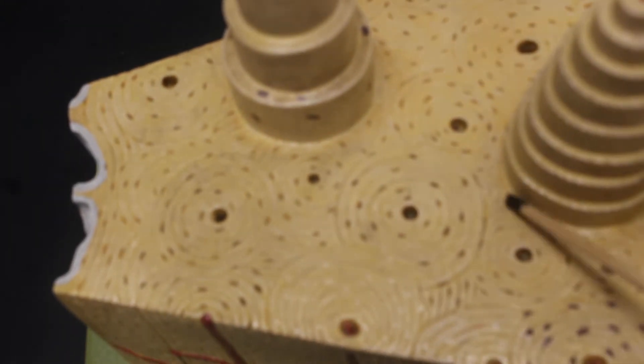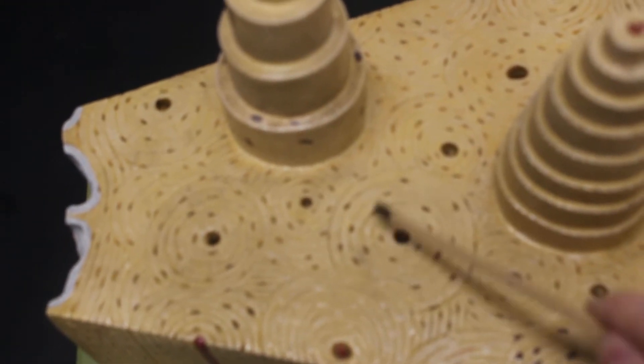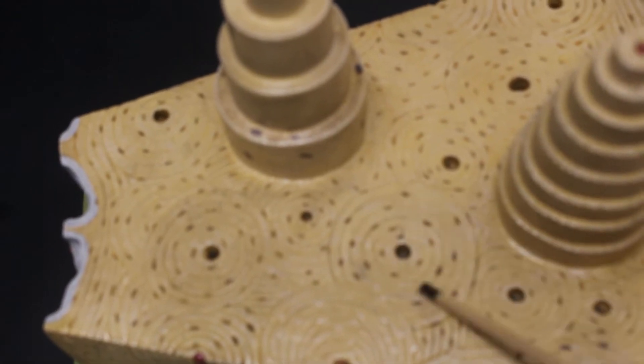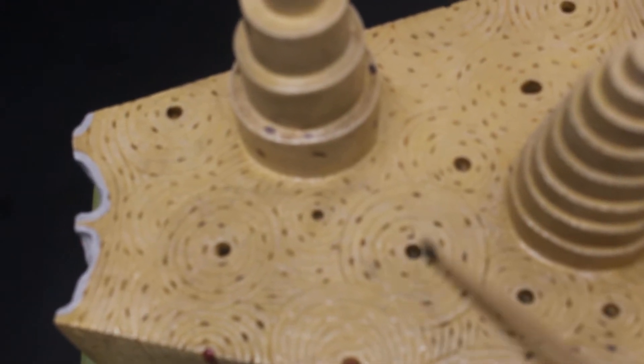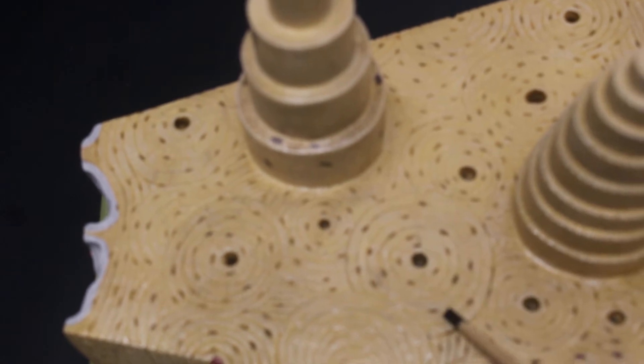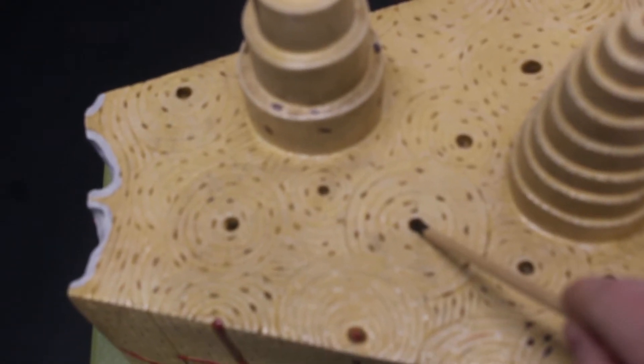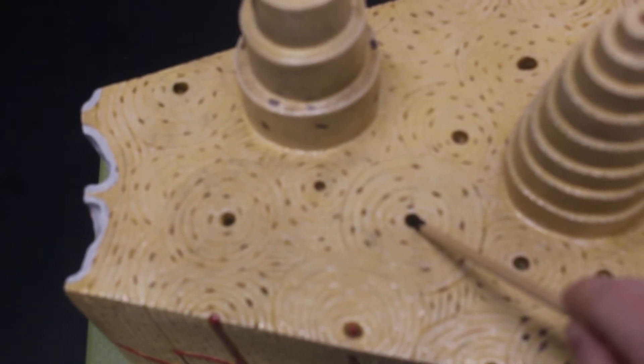Down at the bone structure we see that we have these concentric rings forming around a hole. This entire structure is called the osteon, so this whole thing is an osteon. The hole in the middle, that is a central canal.